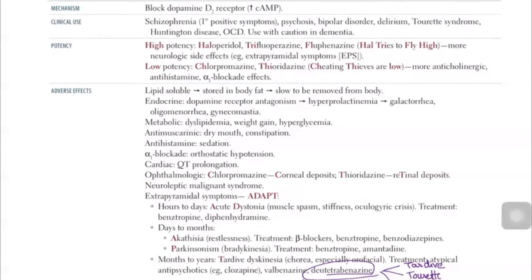For drug-induced Parkinsonism — previously called pseudo-Parkinsonism — the three key features are bradykinesia, rigidity, and tremor. We treat it by giving benzodiazepine, anticholinergic, and amantadine, which is an anti-Parkinsonism drug.